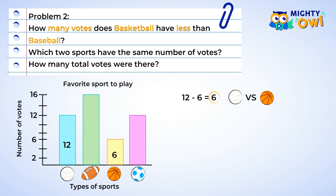The next question asks which sports have the same number of votes. Do any of the bars look to be the same size? Baseball and soccer are! Let's double-check by finding the votes for each of those. Using the same process, it looks like soccer also has 12 votes. So baseball and soccer each have 12 votes. You hit that one out of the park!